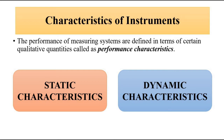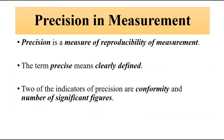We were discussing about static characteristics. So far we have discussed various static characteristics: accuracy, error, different ways of expressing accuracy, and types of error. In the previous video we discussed about repeatability and reproducibility. So in this video we are going to discuss about another important performance characteristic associated with measurement, which is called precision.